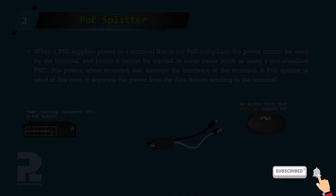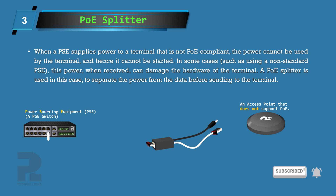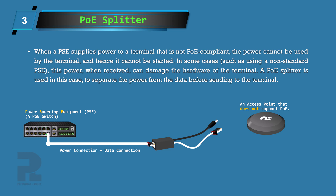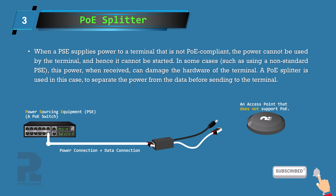Another special scenario is designed for terminals that do not support PoE, when a PoE-capable switch is used on the network. In this scenario, we have an end-span PSE which delivers power from its port. However, this power cannot be directly used by the terminal as it does not support PoE, and in some cases this power may also cause damage to the network terminal.